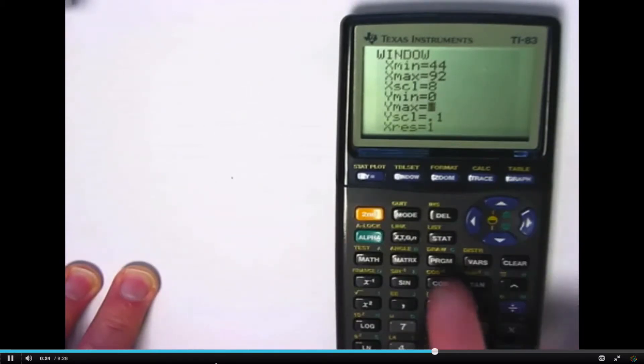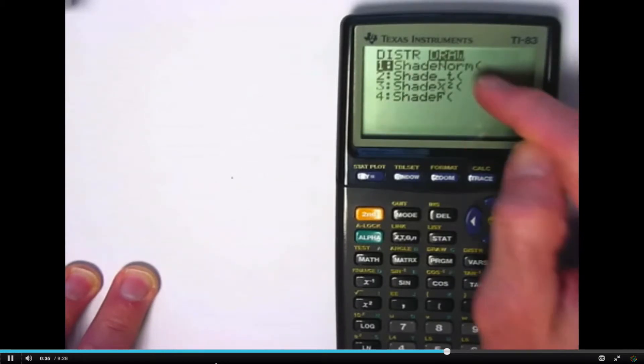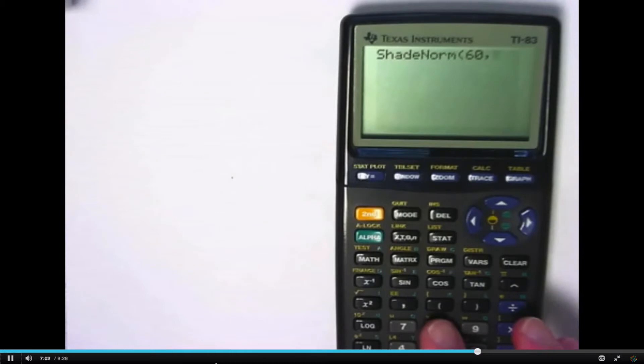I'm going to see this distri, that stands for distribution. I'm going to press my second function key and press that. And I think it'll be simplest if we just draw with shade norm to approximate the area that we're after. So how do I use this shade norm? Well, first I put the left endpoint of the interval that I'm finding the area between under the curve, which was 60. 60 beats per minute, comma. Then you put the right endpoint of the interval that you are finding the area under the curve for, which was 84. Put a comma. Then you put the mean of the normal distribution that you're thinking about here, which is 68. Put a comma. And then you put the standard deviation, which was 8.